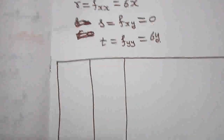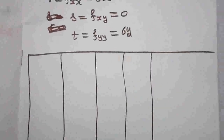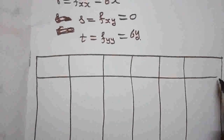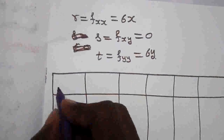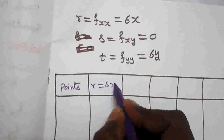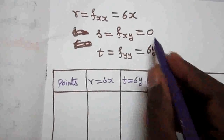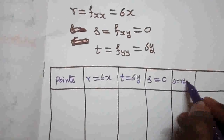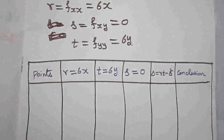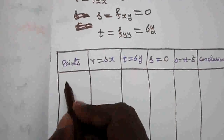Now form a table with columns: point, r = 6x, t = 6y, s = 0, delta = r·t − s², and conclusion. We will evaluate each of the four critical points in this table.